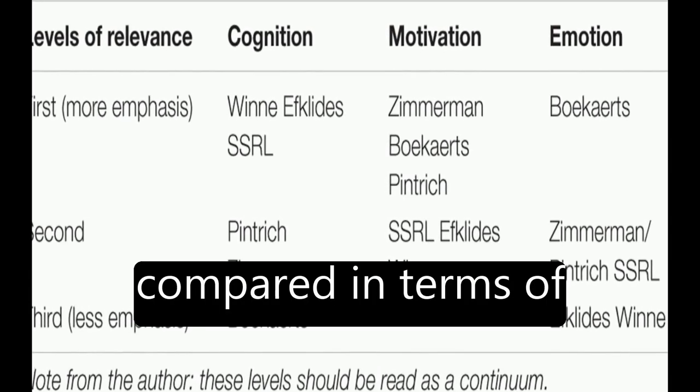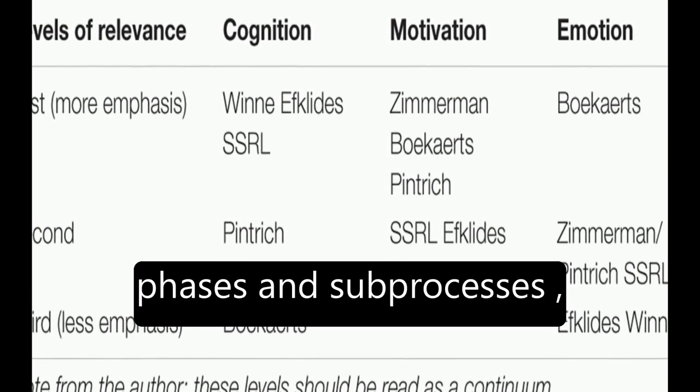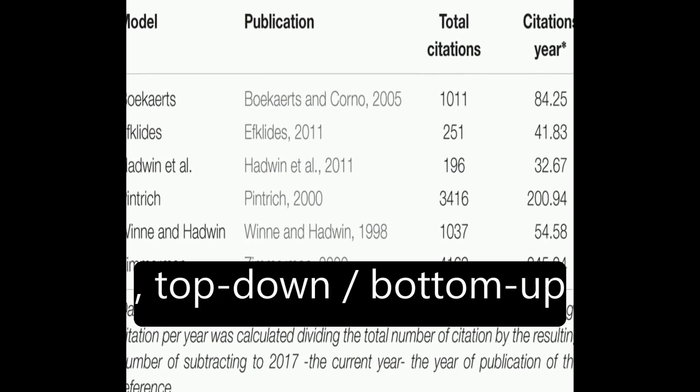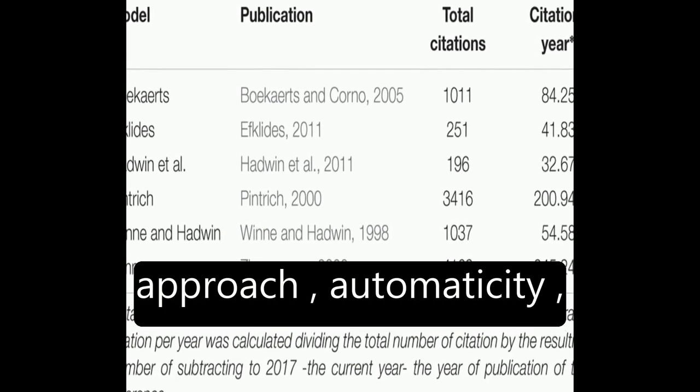The models are then compared in terms of phases and subprocesses, how they conceptualize metacognition, motivation, and emotion, top-down/bottom-up approach, automaticity, and context.